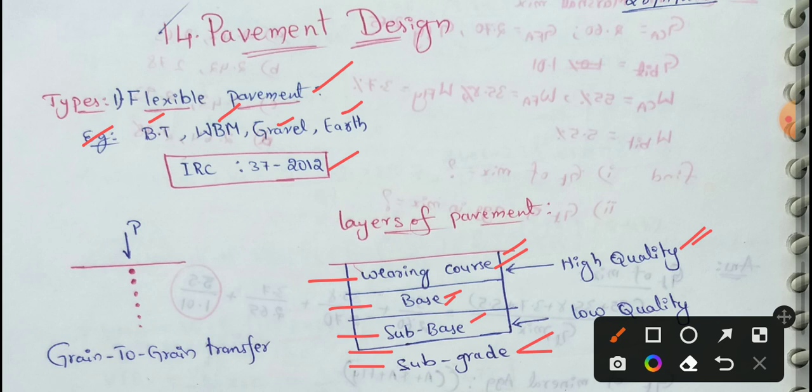Next, flexible pavement functions by way of load distribution through the component of layers. This is load distribution. This is the layers. We are talking about flexible pavement and load distribution. Next, the second one is rigid pavements.